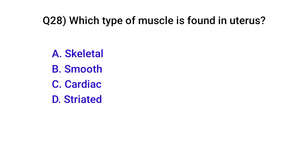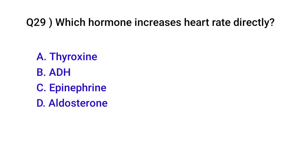Question number twenty-eight: Which type of muscle is found in the uterus? Correct option is B: Smooth muscle. Question number twenty-nine: Which hormone increases heart rate directly? Correct option is C: Epinephrine.